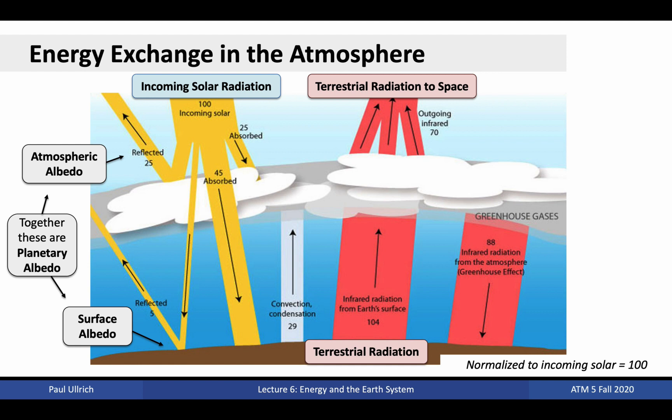This plot has been normalized so that the total energy coming from the sun is 100 units. Planetary albedo, that is, reflection, immediately removes 30 of those units from the system, including 25 units from atmospheric albedo, that is, reflection from clouds and particles in the atmosphere, and 5 units from surface albedo. Of the remaining 70 units, 25 are absorbed by the atmosphere on the way down, and 45 are absorbed by the planetary surface.